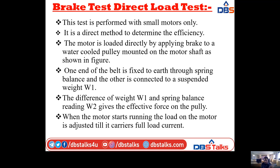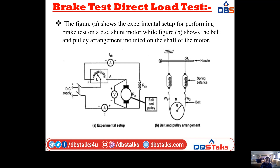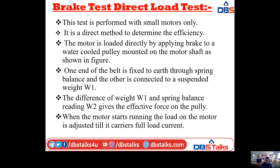One end of the belt is fixed to earth through a spring balance; the other is connected to a suspended weight W1. W2 is fixed and W1 is varied. The difference between weight W1 and spring balance reading W2 gives the effective force on the pulley. The load is adjusted until the motor carries full load current.